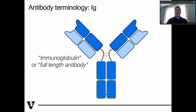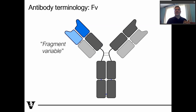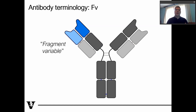A little bit of terminology: the full-length antibody, this complete Y, is the Ig or immunoglobulin. The arms of the Y, which are easy to cleave off with proteolytic techniques, are called the fragment antigen binding region or FAB. And then just the very tips of the antibody — that's the FV or fragment variable region — which is where antigen interaction occurs. For computational modeling, because the rest of the protein is more or less constant throughout various antibodies, a lot of the time we just focus on the FV region, that fragment variable region that's the interaction domain.